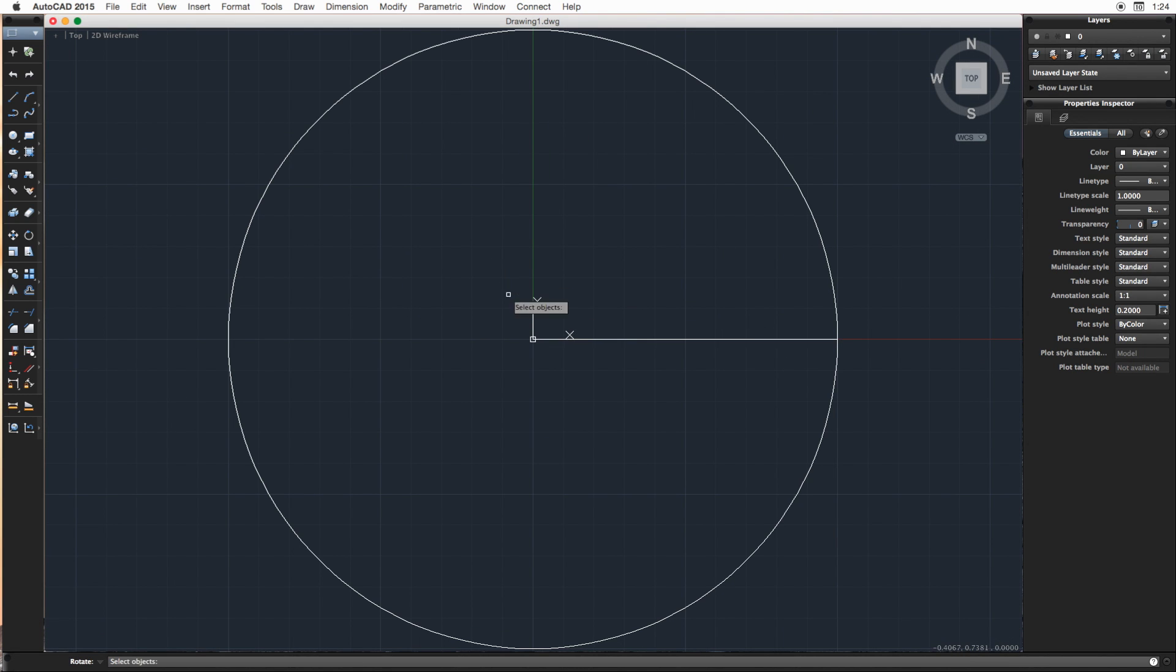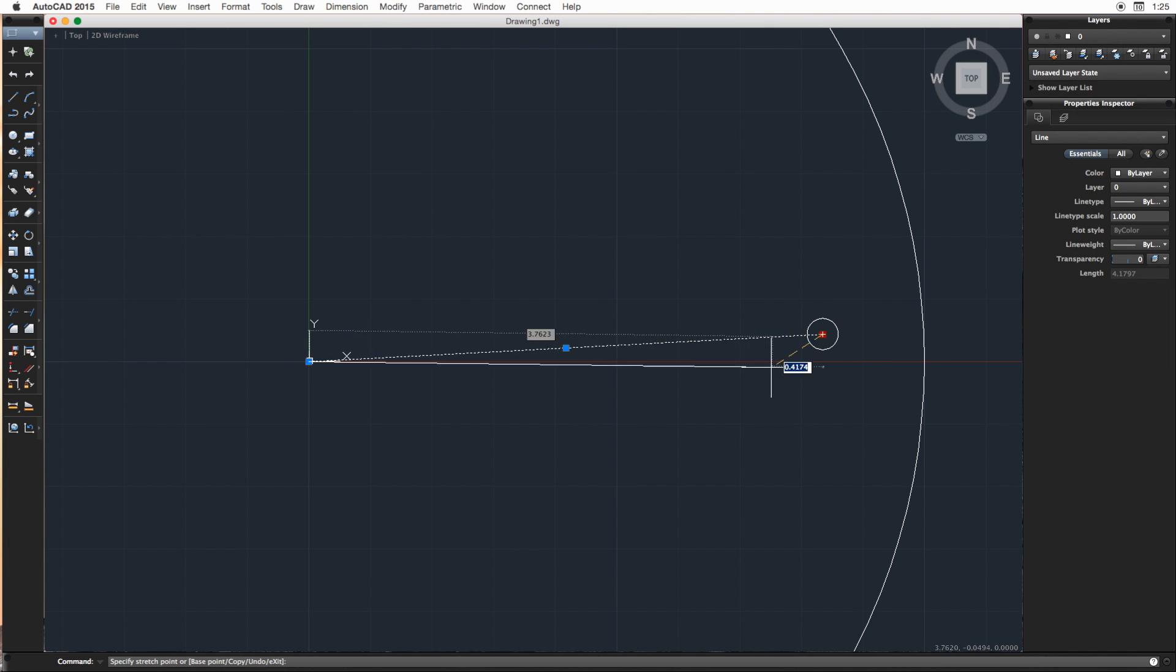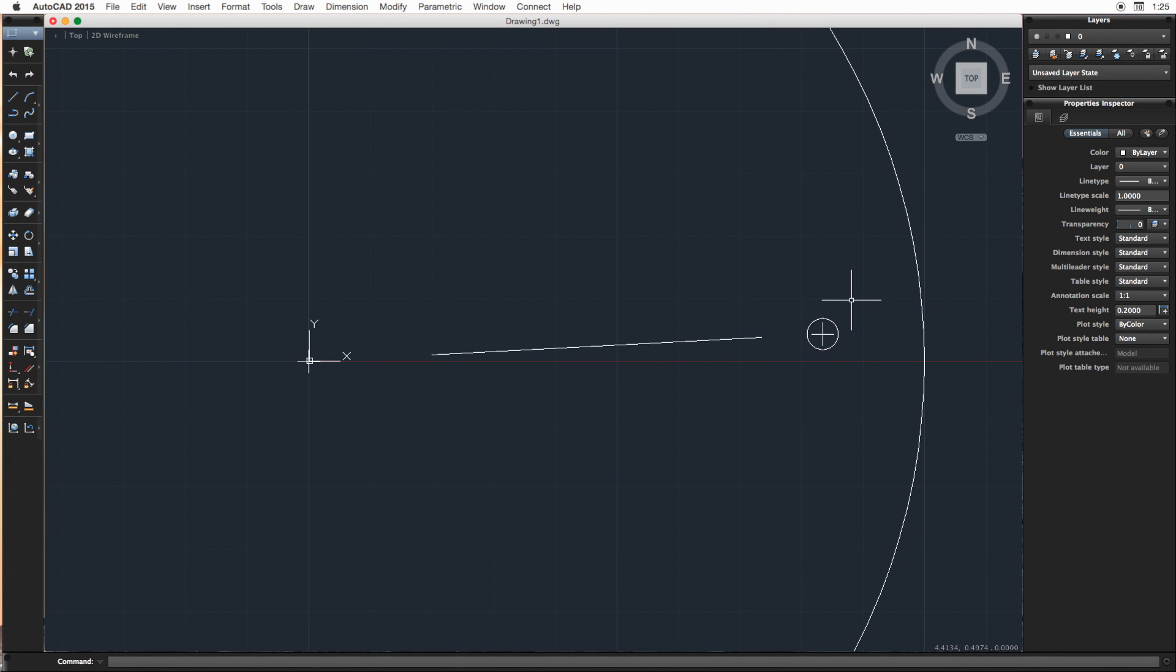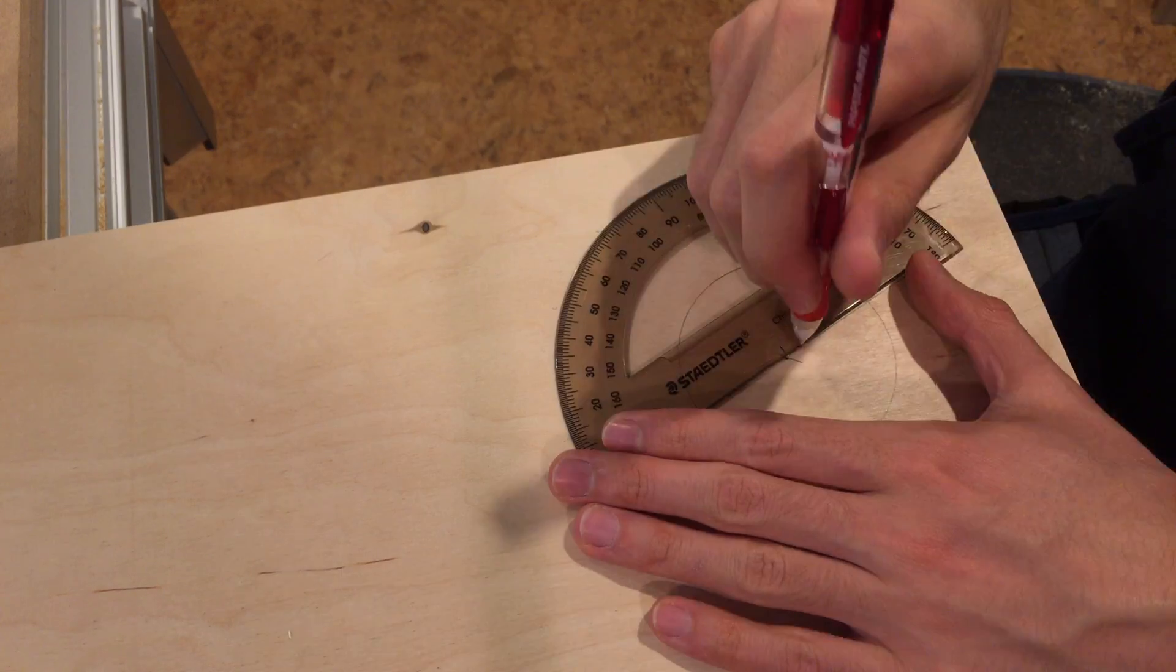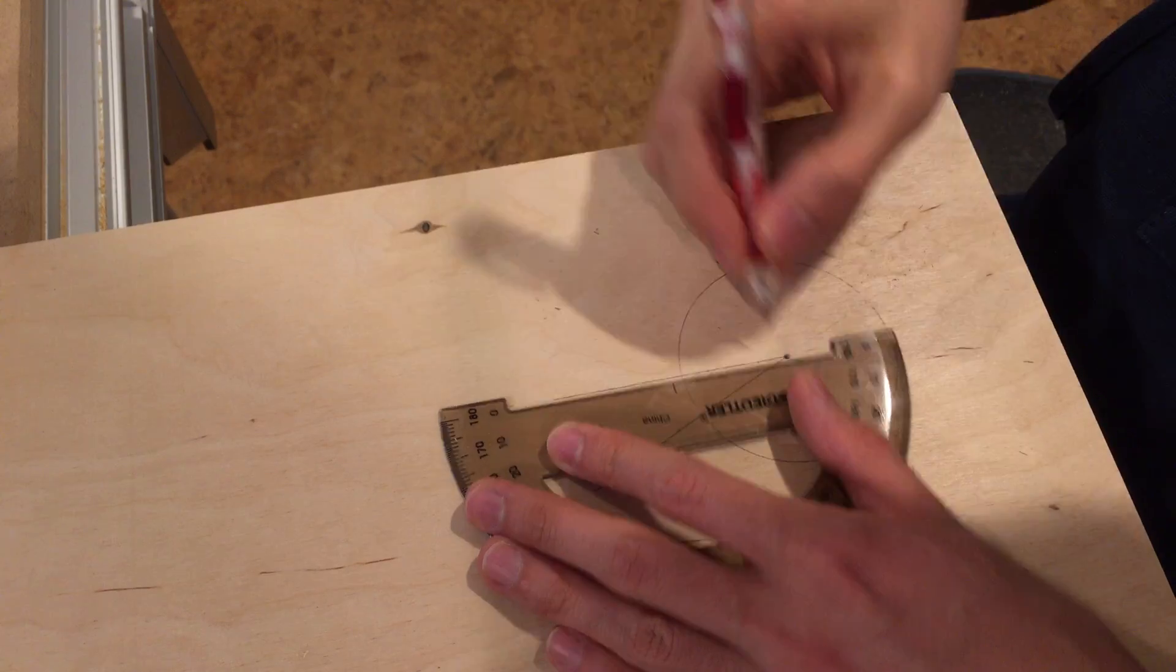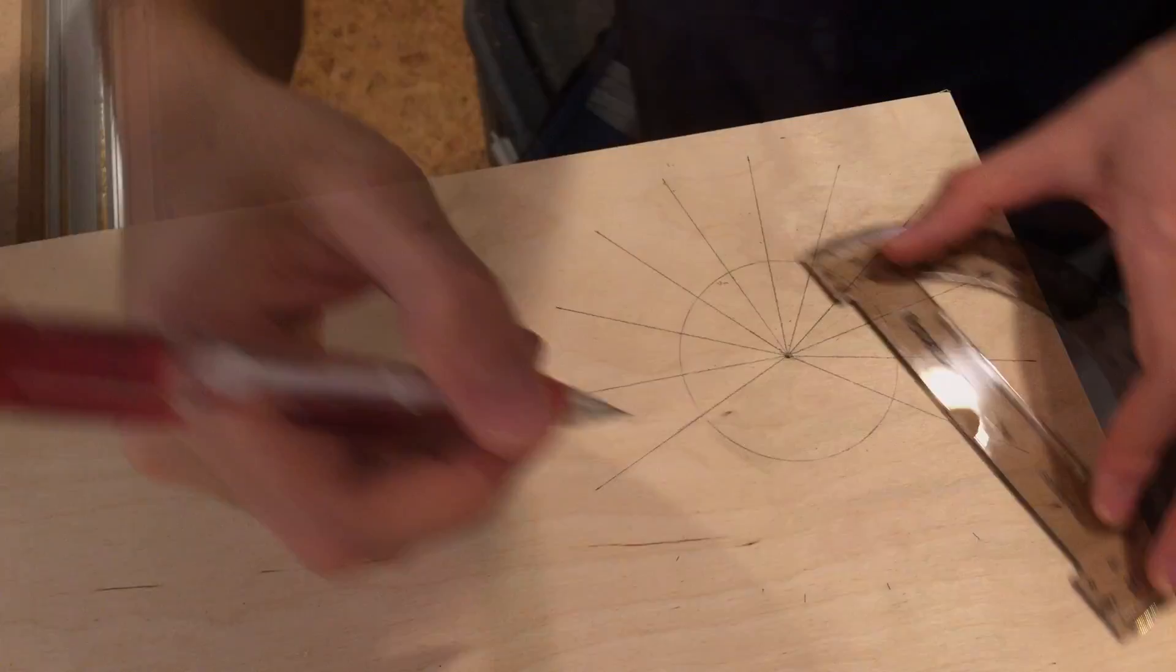Before getting in the shop, I use AutoCAD to create a template that evenly divides a circle according to the number of gear teeth. There's a tutorial for this on my website. If you don't have AutoCAD available, this step can be done with a good old protractor. That's how I lay out the small gear, because there isn't any space to secure a template.